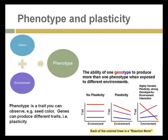Getting back to genotype and phenotype: the genes are one factor, and they interact with the environment to produce the phenotype. So genotype plus environment yields the phenotype, the characteristics of the plant that you see. The ability of one genotype to produce more than one phenotype occurs when plants are exposed to different environments. This is called plasticity. We're going to talk later on about an example with a blue rose where rose color can be produced because of environmental factors, including the pH or other chemicals in the soil.